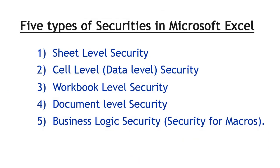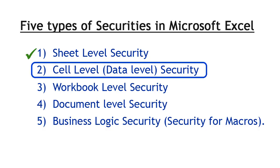Out of five types of securities, we have covered sheet level security. Now let us cover the second type of security, namely cell level security.